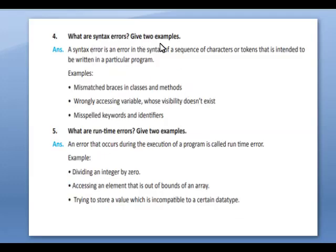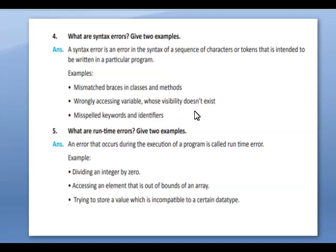What is a syntax error? Give two examples. A syntax error is an error in the syntax of a sequence of characters or tokens that is intended to be written in a particular program. Examples: mismatched braces in classes and methods; wrongly accessing a variable whose visibility does not exist. You need to write any two of the three examples given.